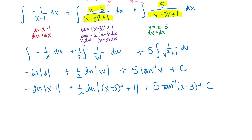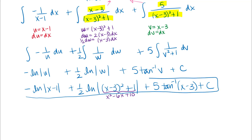Integrating and back-substituting, we get: negative ln of absolute value of x minus one, plus one half natural log of x minus 3 quantity squared plus one, plus 5 times arctangent of x minus 3, plus C. You could multiply back out and rewrite the argument of the ln as x squared minus 6x plus 10, but I might just leave it as is. That's a pretty fun integration problem — lots of creative algebra, just make sure you're not violating any algebra rules: if you add something, you need to subtract something to balance it.